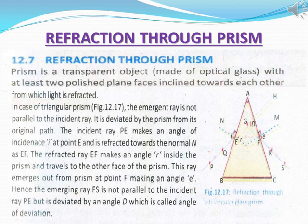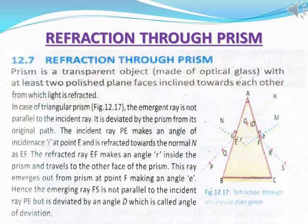Prism شیشے کا ایک شفاف جسم ہوتا ہے جس کی تین سطح rectangular اور دو سطح triangular ہوتی ہیں۔ Triangular prism کی صورت میں خارج ہونے والی یا emergent ray، incident ray کے parallel نہیں ہوتی، جیسا کہ Figure 12.17 میں دکھایا گیا ہے۔ یہ ray prism کے ذریعے اپنی اصل راستے سے ہٹ جاتی ہے۔ Incident ray PE، نقطہ E پر incident angle i بناتی ہوئے normal کی طرف EF کے ساتھ refract ہو جاتی ہے۔